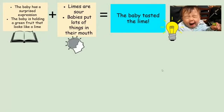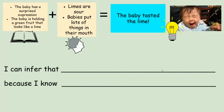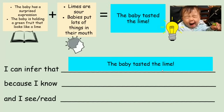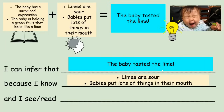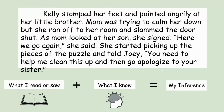Let's practice writing and saying this inference using the sentence frame: 'I can infer that blank because I know blank, and I see or and I read blank.' So: I can infer that the baby tasted the lime, because I know limes are sour and babies put lots of things in their mouth, and I see the baby has a surprised expression and the baby is holding a green fruit that looks like a lime.